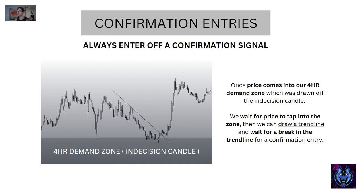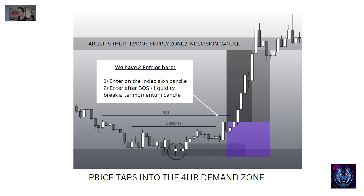Here's an example: once price comes into our four-hour demand zone drawn off the indecision candle, we wait for price to tap the zone, then draw a trend line and wait for a break for confirmation. In another example, we have a previous indecision candle supply zone above and a four-hour demand zone below. Price taps in, comes up, creates equal highs — which are liquidity — and leaves behind a lower time frame indecision candle. Price taps into that candle right to the T, breaks structure, and we enter at the top of the momentum candle. Our target becomes the supply zone above.